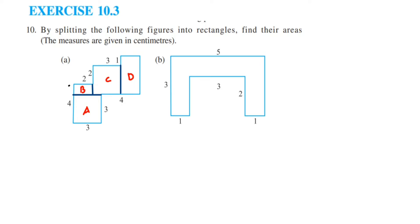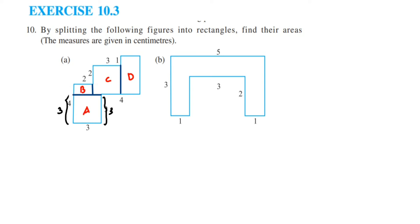The whole side is 4 and this part is 3, which means this portion becomes 1, and this becomes 3 — because these two sides of 3 are parallel. So when we split it up, this side becomes 1 and this side, instead of 4, becomes 3. So 3 plus 1 equals 4.